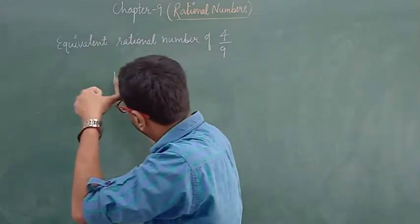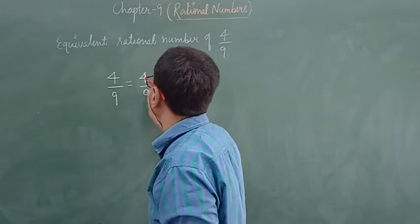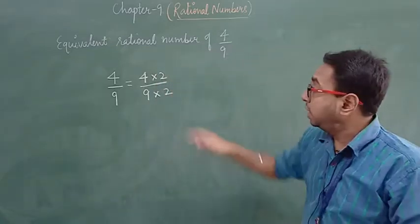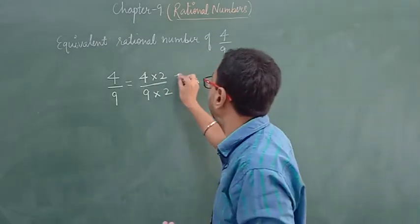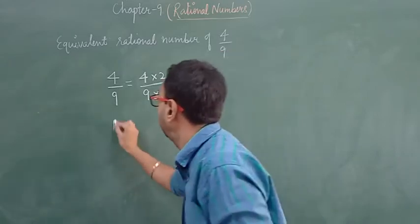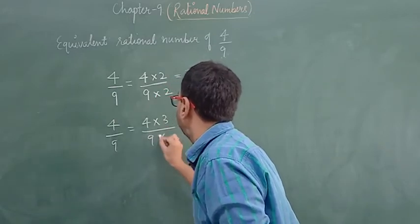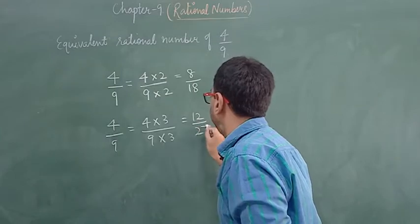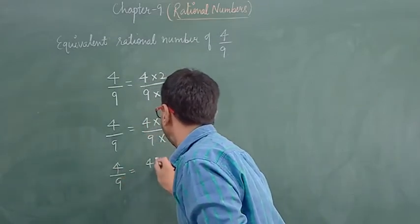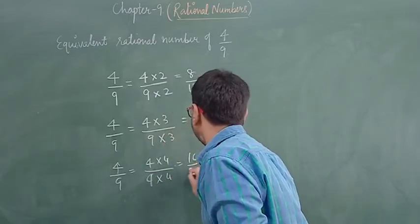For example, we are having 4 by 9. First, multiply by 2 — same number multiplied in numerator and denominator — getting 8 upon 18. Next, 4 by 9 multiplied by 3 gives 12 by 27. Similarly, 4 by 9 multiplied by 4: 4 into 4 is 16, 9 into 4 is 36, giving 16 upon 36.